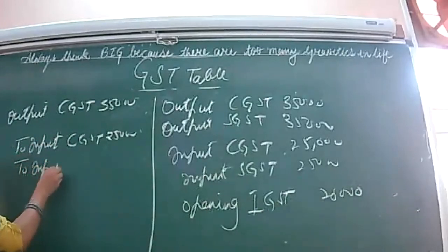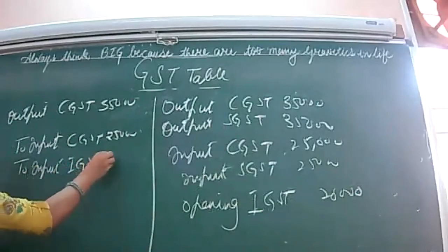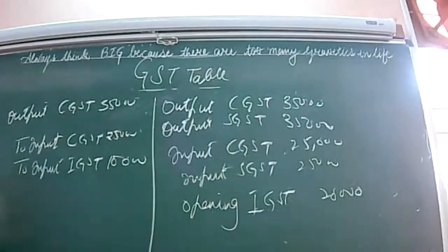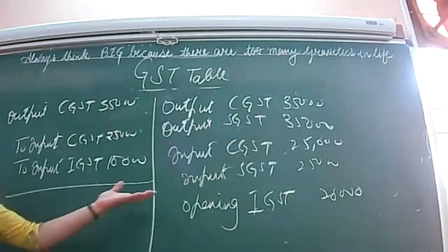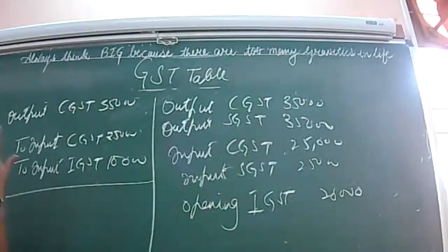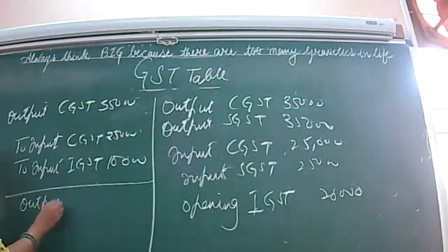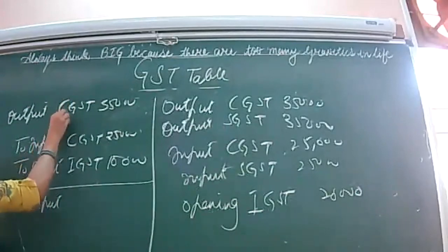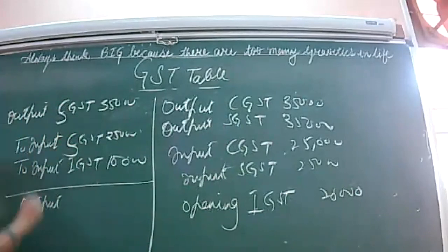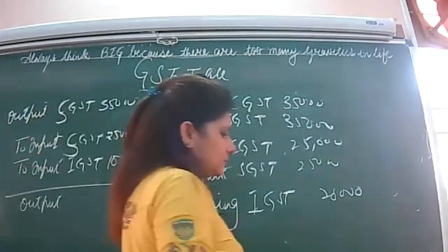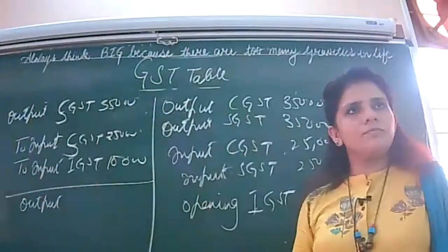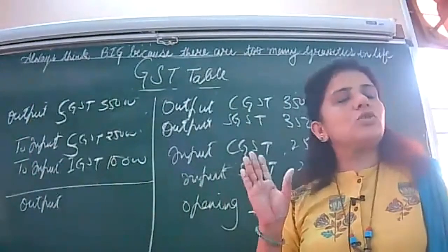Input IGST adjusted to the extent of 10,000. The second entry will be for SGST. Output SGST debited, to input SGST — because IGST can be adjusted against CGST, SGST, or both. Now it should be thoroughly clear to you how these adjustments work. That's enough for today — we will continue tomorrow.